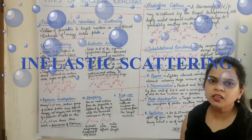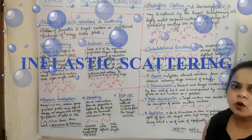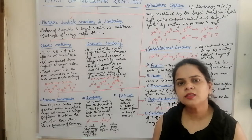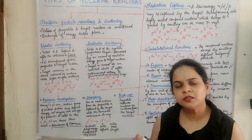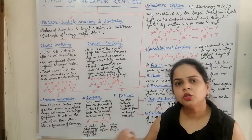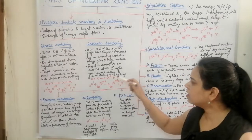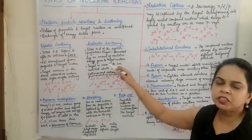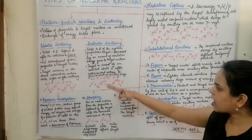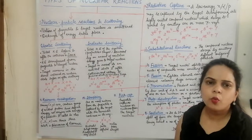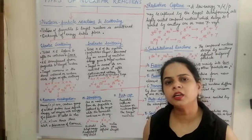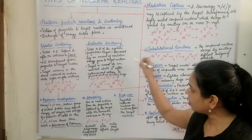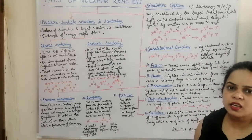In inelastic scattering, the total kinetic energy of the system — the projectile and the target — has decreased, because some part of the kinetic energy has been given to the product to excite it to a higher excited state. The outgoing particle is the same as the incoming particle. The kinetic energy of the system decreases by the amount of excitation energy given to the target nucleus, which is raised to an excited state. This excited target nucleus then comes back to the ground state by liberating one or more photons, resulting in a decrease in kinetic energy.